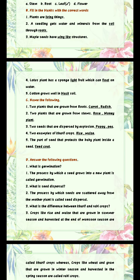Exercise C: Name the following. Number 1: Two plants that are grown from roots. Answer is carrot and radish — C-A-R-R-O-T, R-A-D-I-S-H. Number 2: Two plants that are grown from stems. Answer is rose and money plant — R-O-S-E, M-O-N-E-Y P-L-A-N-T. Number 3: Two seeds that are dispersed by explosion. Answer is poppy and pea — P-O-P-P-Y, P-E-A.